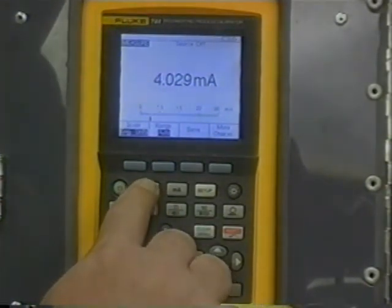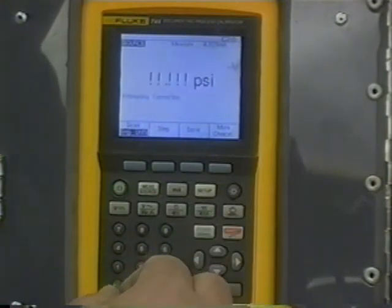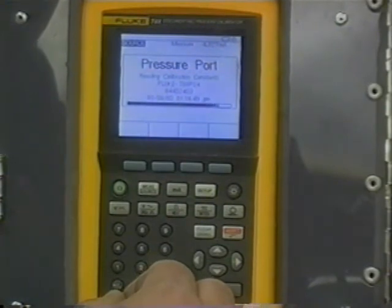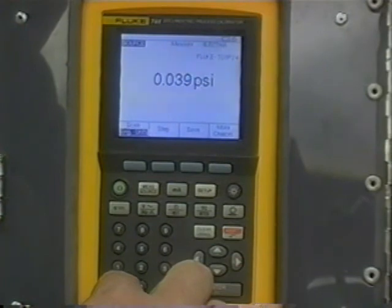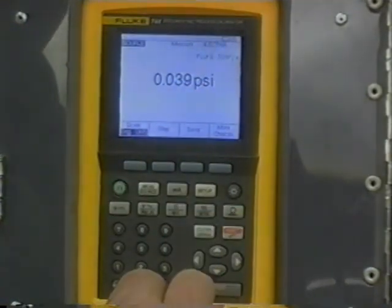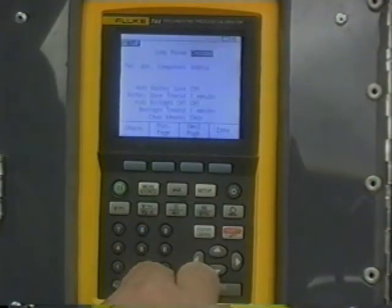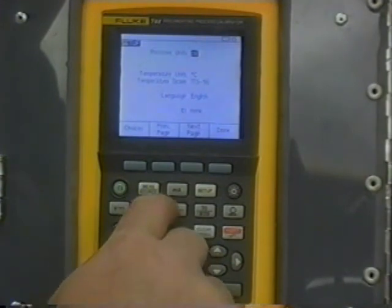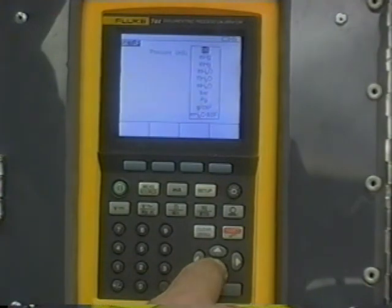As you can see, we're also going to be using this device to control the pressure that we're putting into the transmitter. So if I hit the measure source button, we go over to source and hit the pressure button, all of a sudden up comes the pressure. The range we're going to be using for this lab is going to be 0 to 100 inches of water. As you can see, we're in PSI right now, so you're going to want to change that. Hit the setup button, next page, next page, pressure units PSI. We're going to come down and use inches of water.